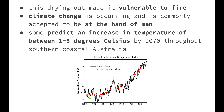Climate change is occurring perhaps at an unprecedented rate and is commonly accepted to be by the hand of man. Some scientists predict a rise in temperature of between 1 to 5 degrees Celsius by 2070 on the southern Australian coast.